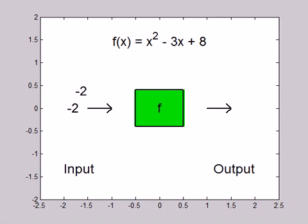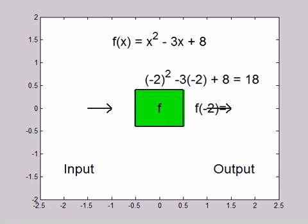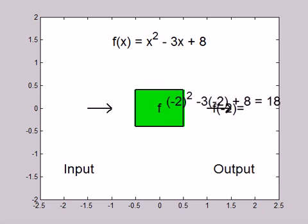Because the input is negative, we must be sure to write the negative 2 in parentheses everywhere there's an x, as shown. Then the arithmetic yields 4 plus 6 plus 8 equals 18.